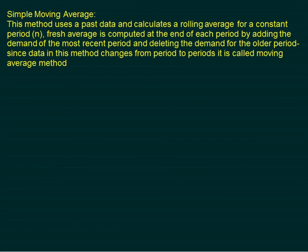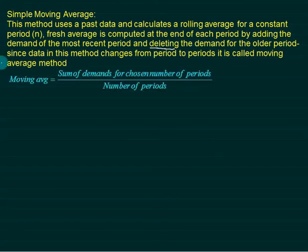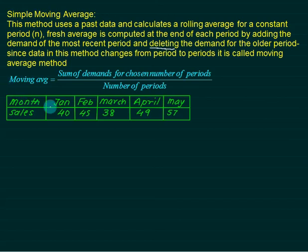Let's start with the simple moving average method. This method uses past data and calculates a rolling average for a constant period n — whether three months, four months, or five months, as given. A fresh average is computed at the end of each period by adding the demand of the new period and deleting the oldest period's demand. The mathematical equation is: moving average equals the sum of demand for the chosen n periods divided by n, which gives the forecast for the next period.